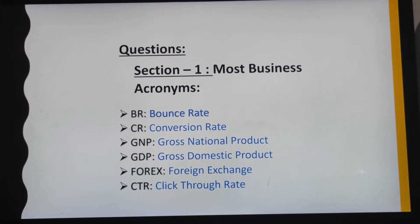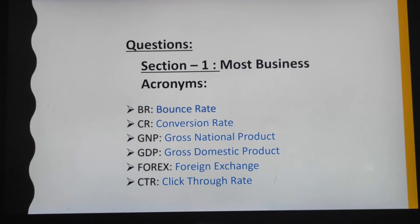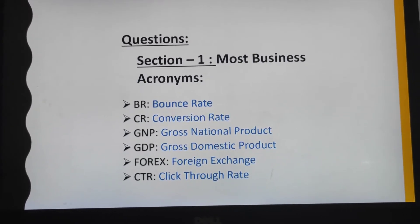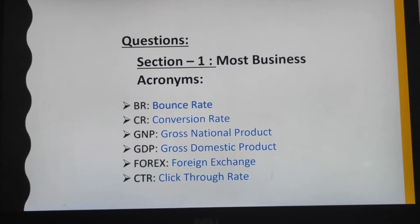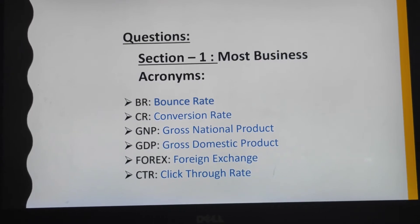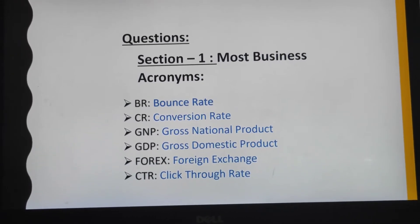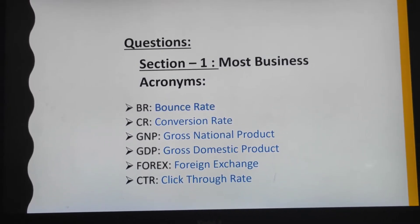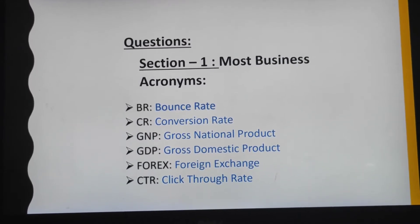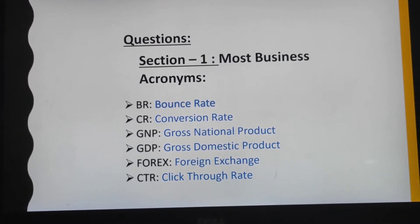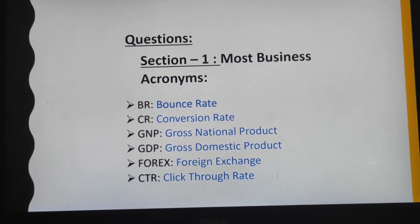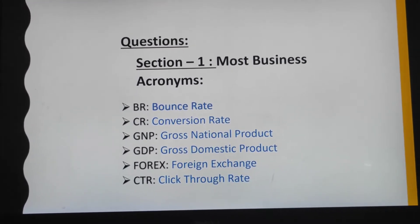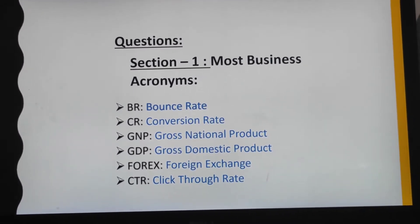Moving on to our next slide: BR: bounce rate. CR: conversion rate. GNP: gross national product. GDP: gross domestic product. Forex: foreign exchange. CTR: click through rate. These are the acronyms.